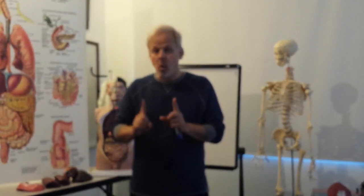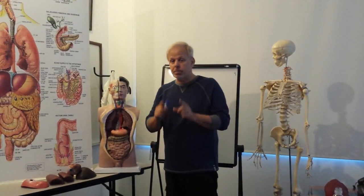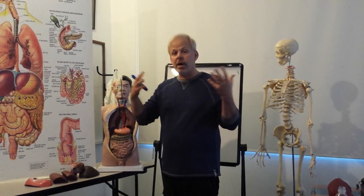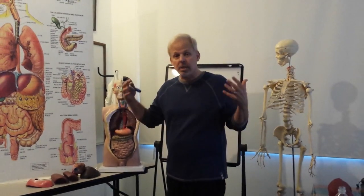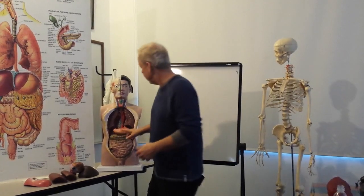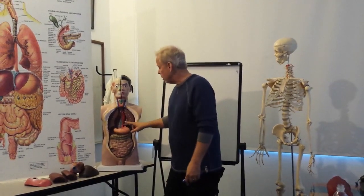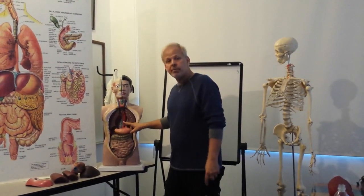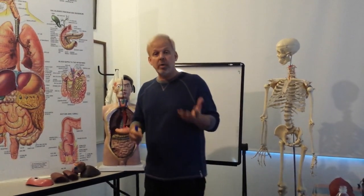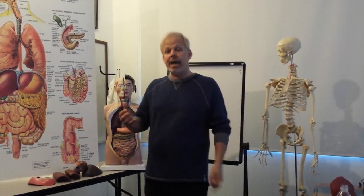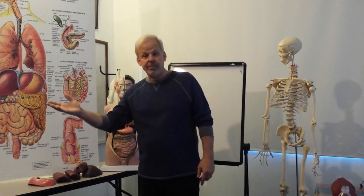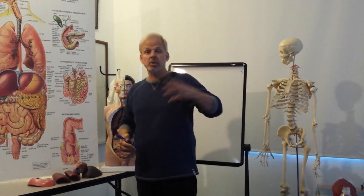The main organ that is responsible for alkalizing all of our other glands, our blood, and our bones is the stomach. The main purpose of the stomach is to create sodium bicarbonate, to supply that sodium bicarbonate to the salivary glands and to the pancreas.